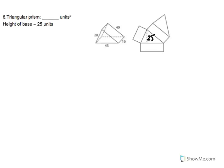So then we can break our prism into a net. So this is 43, 16, 16, 28, 16, 40, and the height is also 25. So then we can break this up into each individual area.